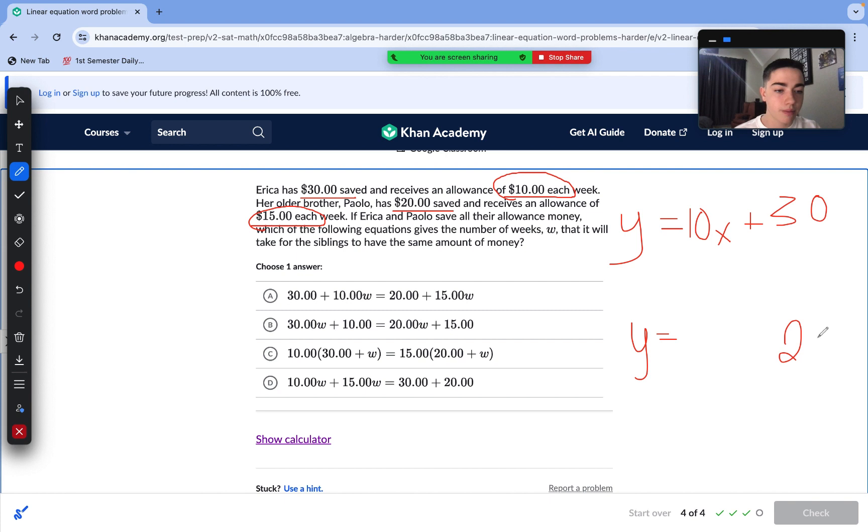$20 saved. That's our initial amount. And then, $15 each week. That's our slope. Paolo's equation is Y equals 15X plus 20. And then, you might be asking, oh, none of these answer choices look anything near that. Well, this is where we take a look at the rest of our question here. If Erica and Paolo save all their allowance money, which of the following equations gives the number of weeks that it would take for the siblings to have the same amount of money. That means our total amount, our Y, is actually going to be equal to.